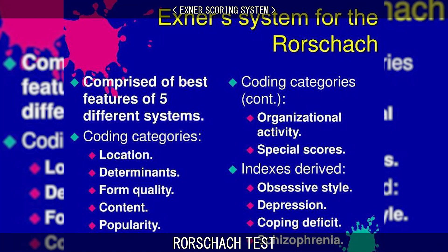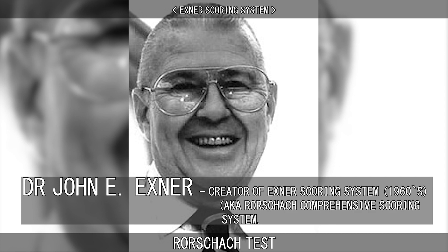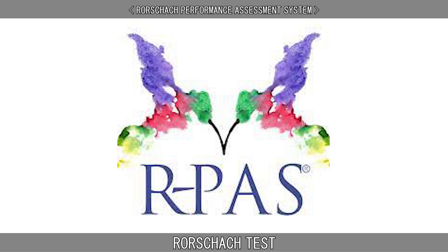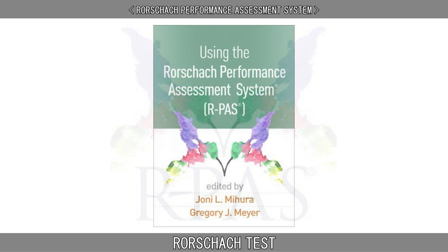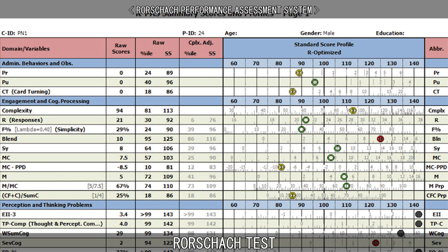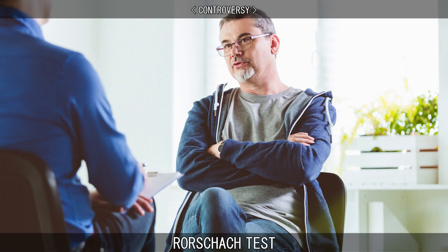The Exner scoring system was the standard method for interpreting the Rorschach data. It was developed in the 1960s by Dr John E. Exner after he realised that at least five related but ultimately different methods of analysis were in common use at the time. The Rorschach Performance Assessment System is a scoring method created by several members of the Rorschach Research Council and published in 2011. It was believed that, after years of collecting data, the Exner scoring system was in need of an update, and it attempts to create a current, empirically based and internationally focused scoring system that is easier to use.